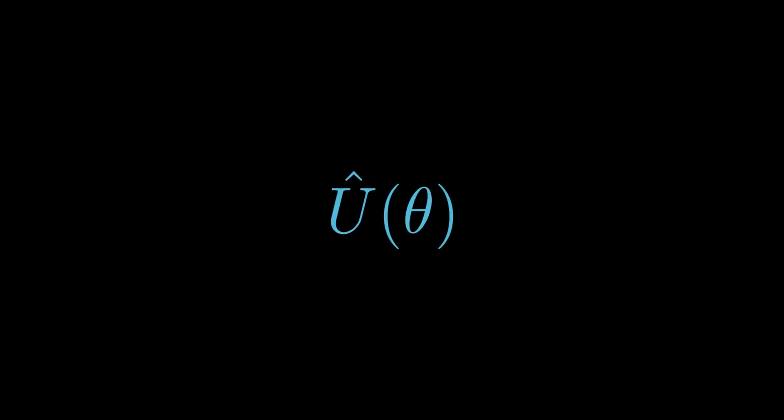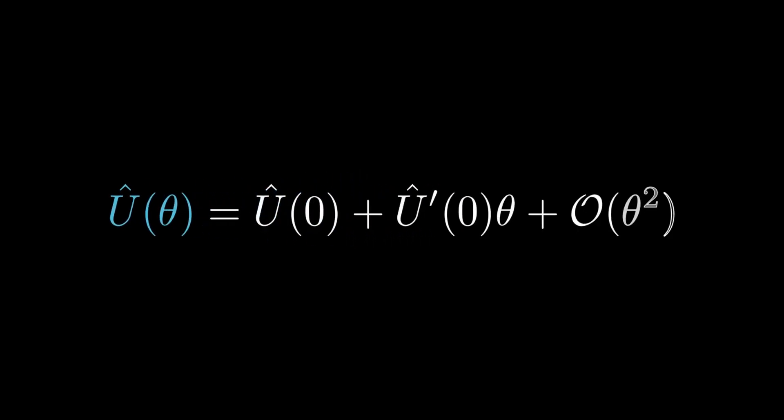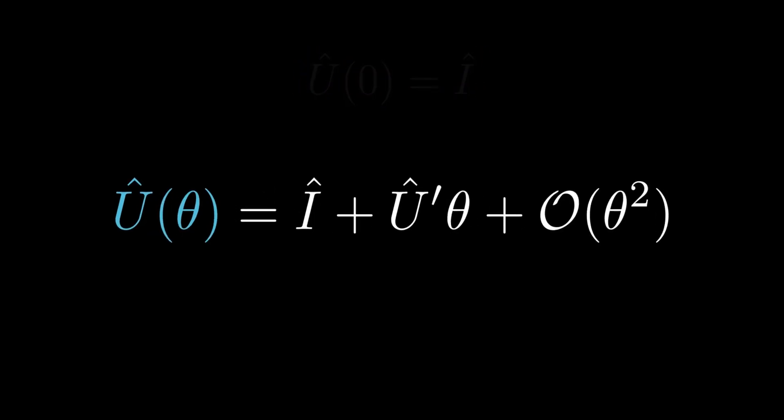We now parameterize U with the real parameter theta. The parameter quantifies how much the state has changed. Taylor series expansion of the operator yields the equation on the screen, where U-prime of 0 is the first derivative of U with respect to theta, evaluated at theta equals 0. O of theta-squared denotes terms that are second order and higher. When theta equals 0, the state must remain unchanged, and we can conclude U of 0 is the identity.